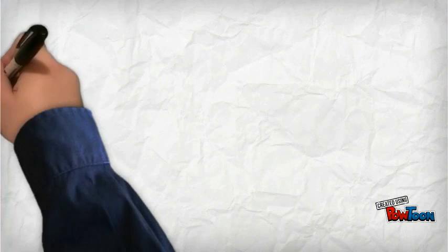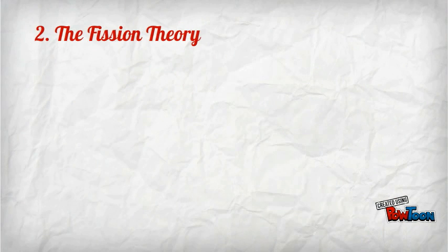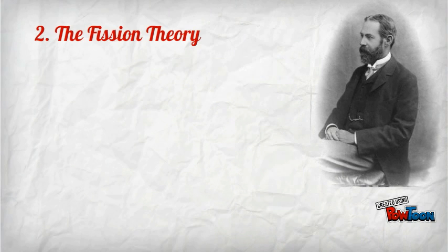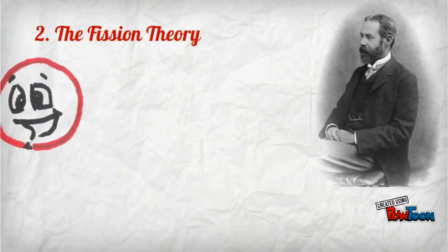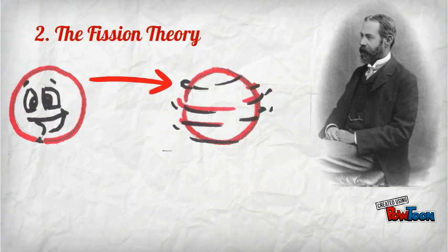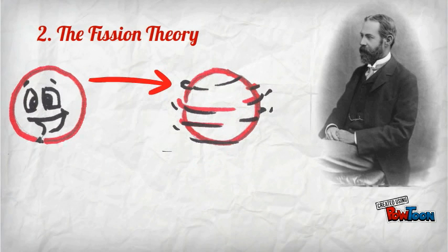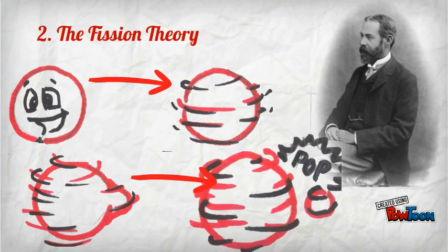The second theory is the Fission Theory. It was proposed by George Darwin in the 19th century. He stated that the material that formed the moon was ejected into space by a molten, fast-spinning Earth in the very early days of the solar system. But most scientists discount the fission hypothesis, saying that Earth couldn't have been spinning fast enough to expel a moon-sized piece of rock.